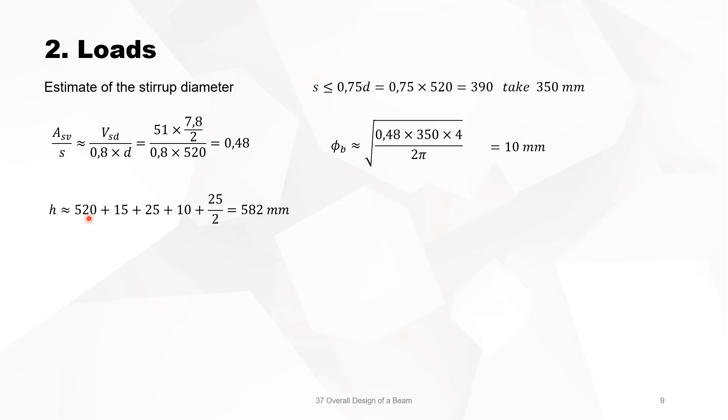So now we have estimated the depth of the beam, we have calculated the concrete cover, and we have estimated the diameter of the tension reinforcement and the diameter of the stirrups. So this is still an estimate. Now we know more or less what we are doing, we take 600, and the first cast of the dimension is then 600 times 300.